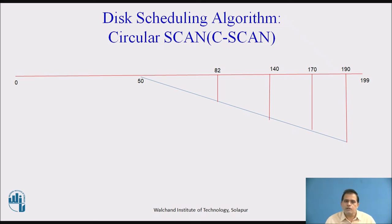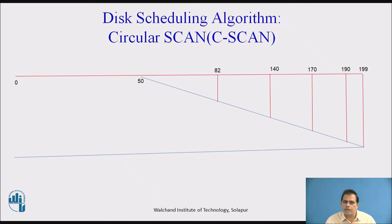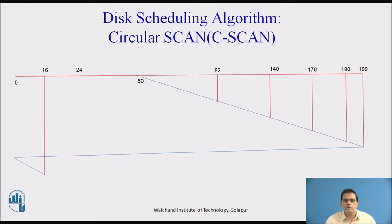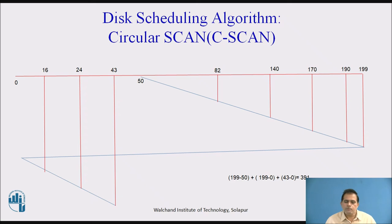After reaching 199, the head moves directly to 0, because in the algorithm when moving left, the head goes directly to the start of the track — position 0 — without servicing any requests. From 0, the head moves again to the right. The remaining requests less than 50 are 16, 24, and 43. So we move from 0 to 16, then 24, then 43, servicing each.